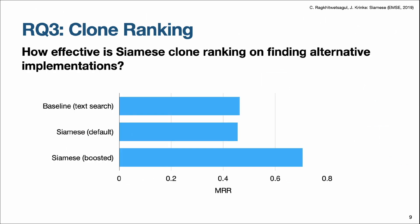About clone ranking: Siamese can look for alternative implementations, meaning code clones that have several modifications but still perform the same task. By giving different weighting scores, you can boost Siamese to search for this kind of specific clones, compared to the performance of the baseline text search and the default configuration.